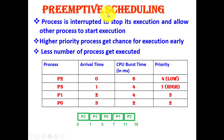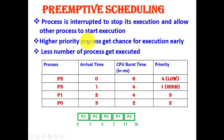So this type of scheduling — in which a currently running process is interrupted when a higher-priority process enters the system — is known as preemptive scheduling.